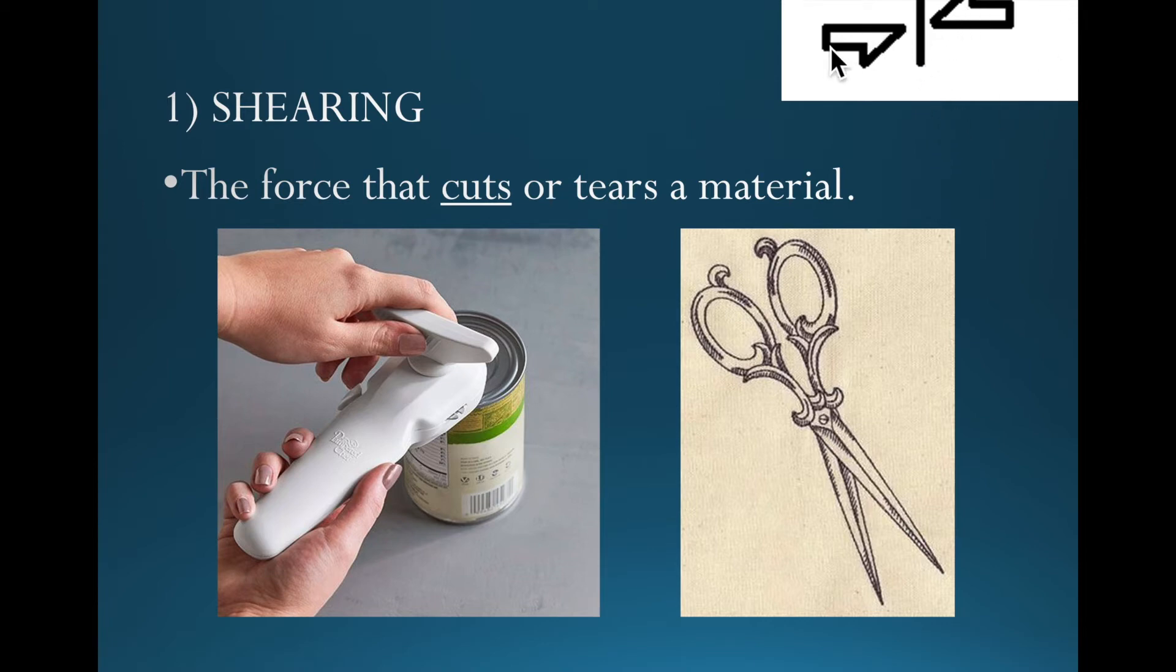At the top right, you have the symbol we use to represent shearing - two half arrows, sometimes pointing towards each other, sometimes one above the other. Essentially, they're two half arrows to represent that there's basically a fracture, a cut between the two parts of the original material.